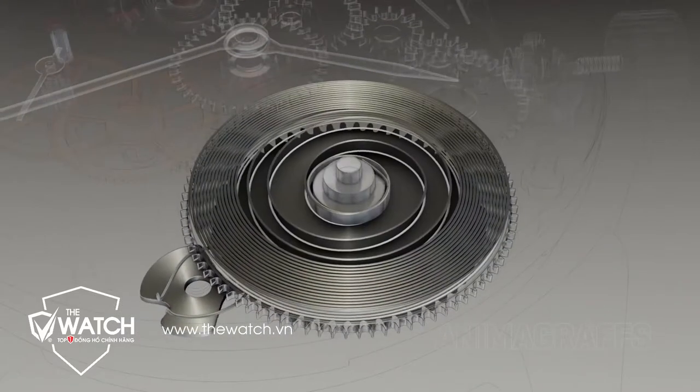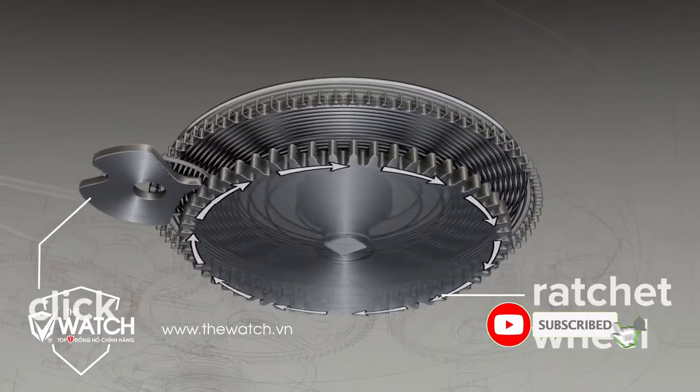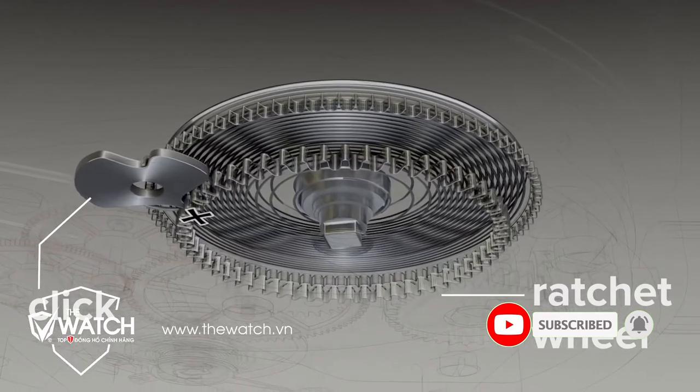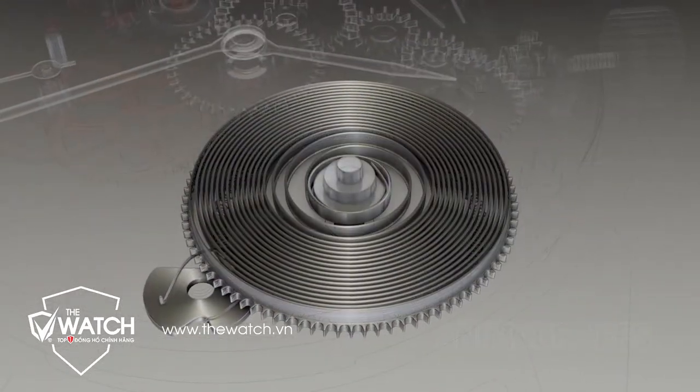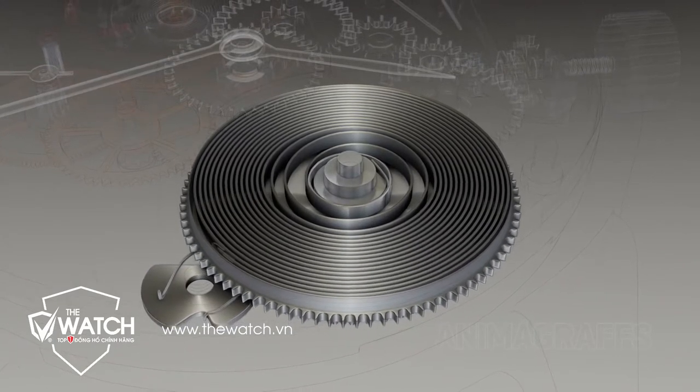The winding pinion moves independently of the barrel. A connected ratchet wheel and click assembly allows the pinion to rotate in only one direction, keeping the spring from unwinding and ensuring that spring power can only exit through the barrel.